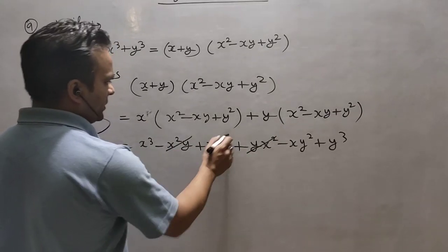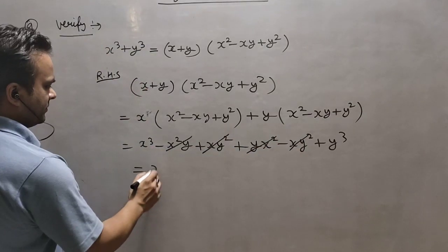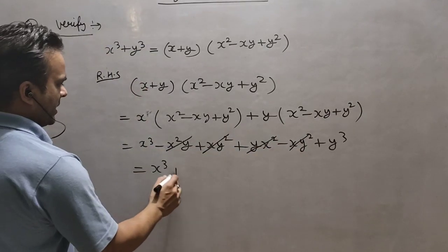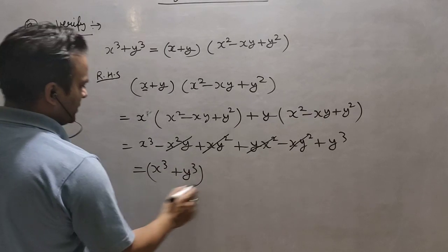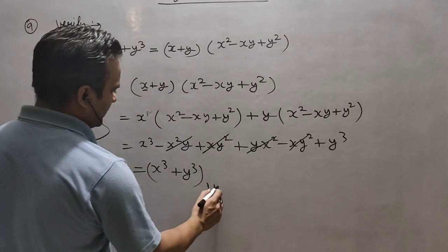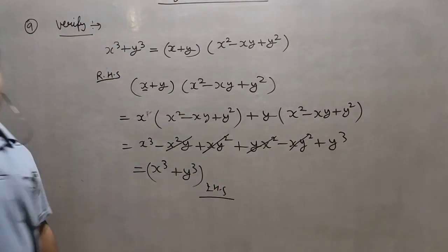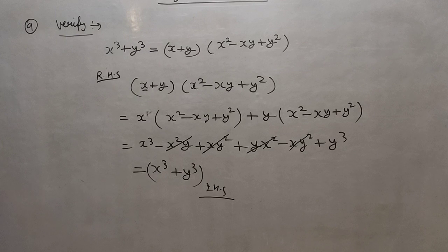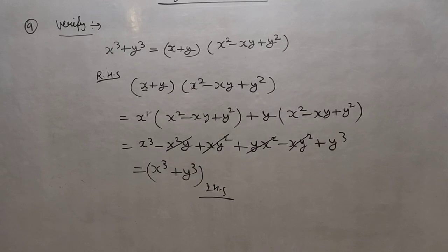You can see the -yx² and +yx² cancel, and -xy² and +xy² cancel. What is left? x³ + y³. So the left-hand side is proved. In the second part we have to prove the second identity x³ - y³, and again the same process applies. You can do this one similarly.